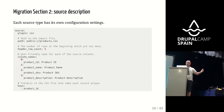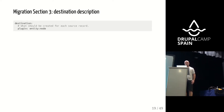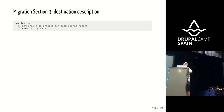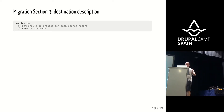That's the description of the source: where to find the data, what are the columns, what's the order of the columns, and what makes a record unique. The destination is the answer to the question: what needs to happen for each of these records? Do we want to create users? Do we want to create nodes? Do we want to create configuration entities? In the most common scenario, for every record in our source, we want to create entities — because most of the time you'll be importing nodes, users, or taxonomy terms.